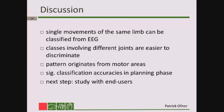To conclude, we have shown that single movements of the same limb can be classified from EEG — good news for neuroprosthesis control. As previously established, executed movements are the best simulation for attempted movements in spinal cord injured persons. Classes involving different joints are easier to discriminate — for example, it is easier to discriminate supination and elbow flexion than supination and pronation. The patterns originate from motor areas, meaning we decoded from brain signals and not movement artifacts. Classification accuracies were significant before the movement onset, which is important for spinal cord injured users who cannot execute movements.